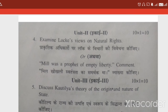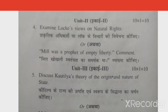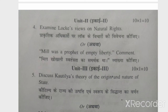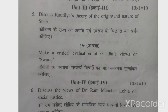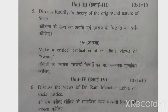Moving further, Unit 2 is also covered here as question number 4. The examiner gives: Locke's views on natural rights, and Mill was a prophet of negative liberty. Mill supported liberty (Khokli Swatantrata ka samarthak tha) — Liberty do, Liberty do. Unit 3 question: Discuss Kautilya's theory of the organic origin and nature of the state (Kautilya ke rajya ke utpatti evam swaroop ke siddhant ka varnan kijiye). Note that Kautilya also appeared earlier with the Seven Organs question.